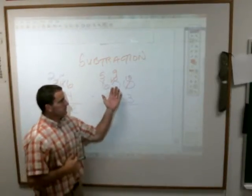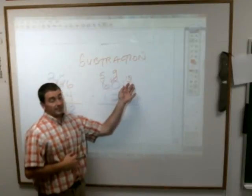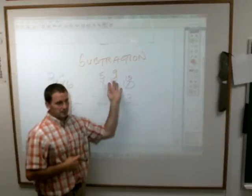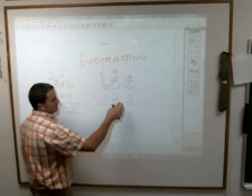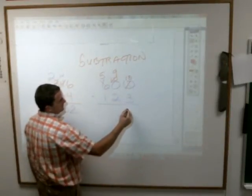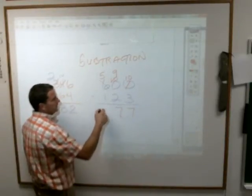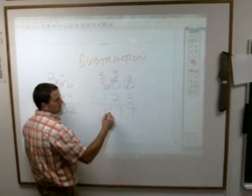A lot of times people think that when they're borrowing they put a nine there instead of a 10, especially when you do it a lot. They think everything's nine, but that's not the case. Three from 10 is seven. Two from nine is seven. And one from five is four.